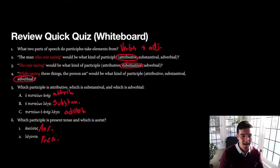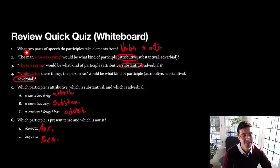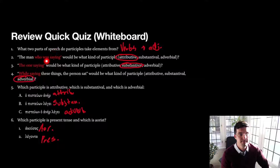All right. So here we have a review of both syntax and a little bit of forms. As to parts of speech of participles, or what they take their parts from: verbs and adjectives — they are verbal adjectives. 'The man who was saying' is an attributive participle modifying the noun 'the man.' In Greek, we would have this as a definite article with the word for man, 'anēr,' and then a definite article with the participle for 'was saying,' 'legōn' in this case.